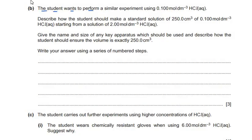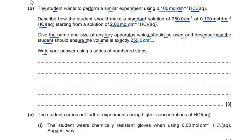Next is sub-question B. The student wants to perform a similar experiment using 0.1 mol per dm³ HCl. Describe how the student should make a standard solution of 250 cm³ of 0.1 mol per dm³ HCl starting from a solution of 2 mol per dm³ HCl. Give the name and size of any key apparatus and describe how to ensure the volume is exactly 250 cm³. We are provided with 2 mol per dm³ HCl and we need to dilute it to 0.1 mol per dm³.